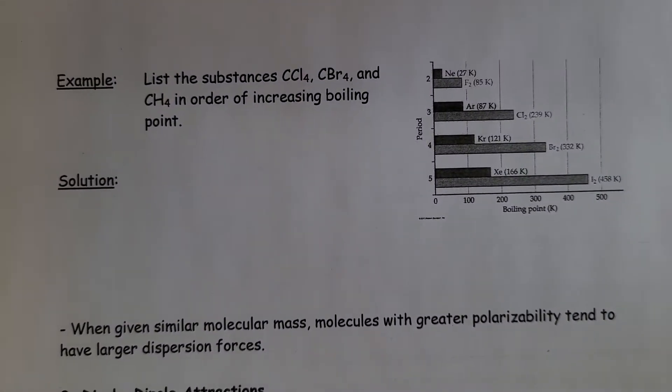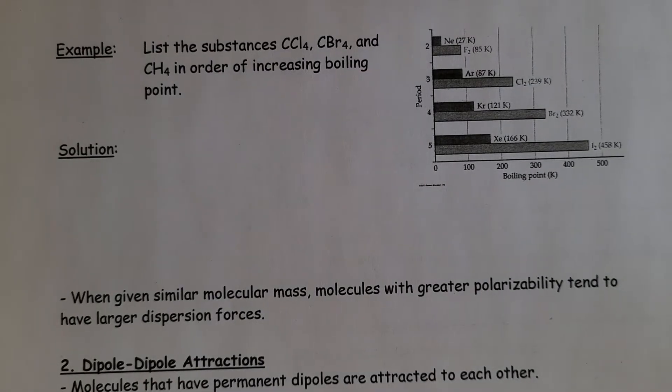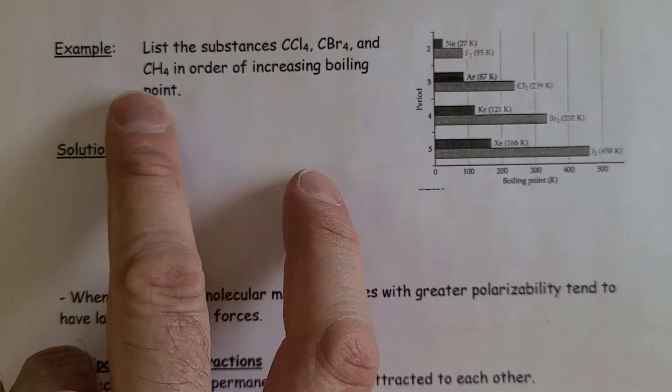If we look at this example: list the substances carbon tetrachloride CCl4, carbon tetrabromide CBr4, and methane CH4 in order of increasing boiling point.